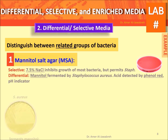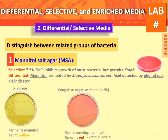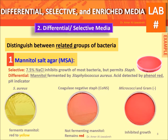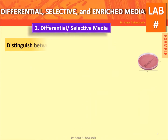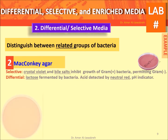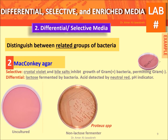Mannitol salt agar: selective by 7.5% NaCl, differential by mannitol and phenol red pH indicator. MacConkey agar: selective by crystal violet and bile salts.